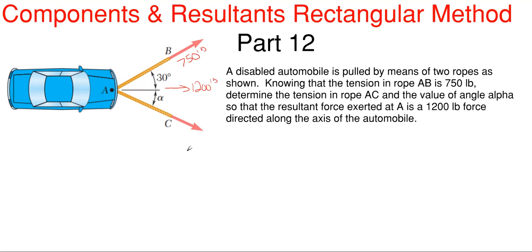So if we want to draw a free body diagram for this portion, taking A as our center here, this is what we would have going on. There's our x and there's our y. We would have our resultant force of 1200 pounds along the x-axis.